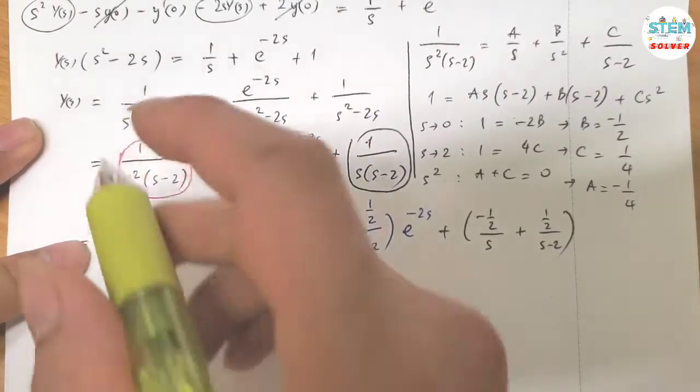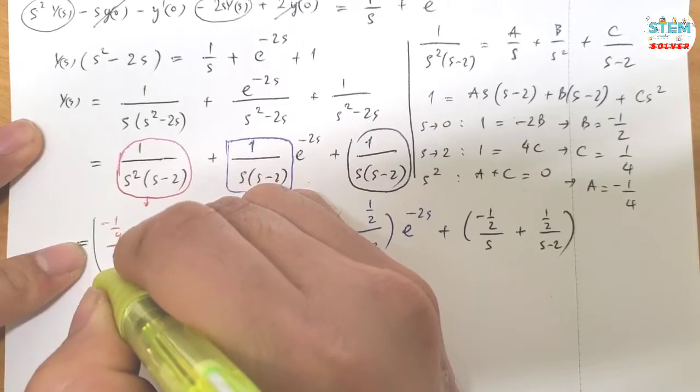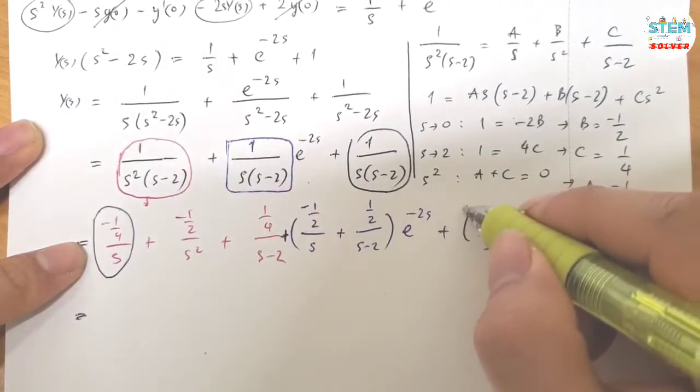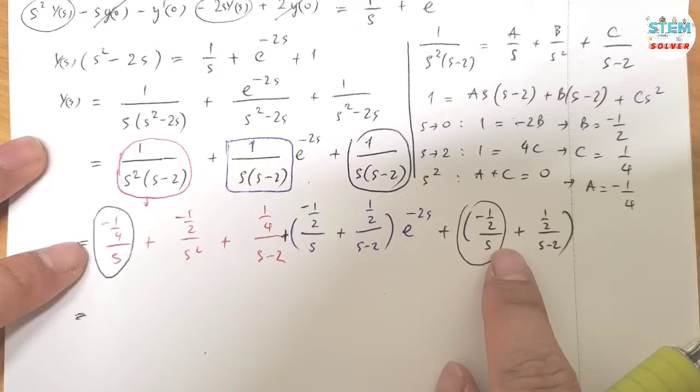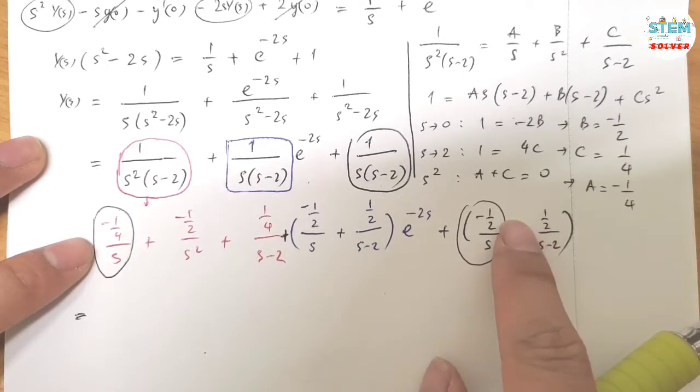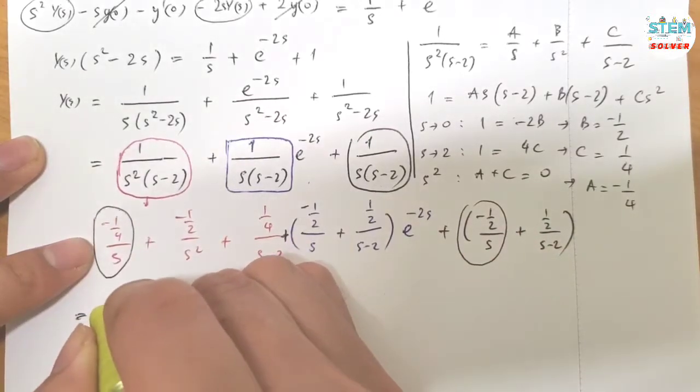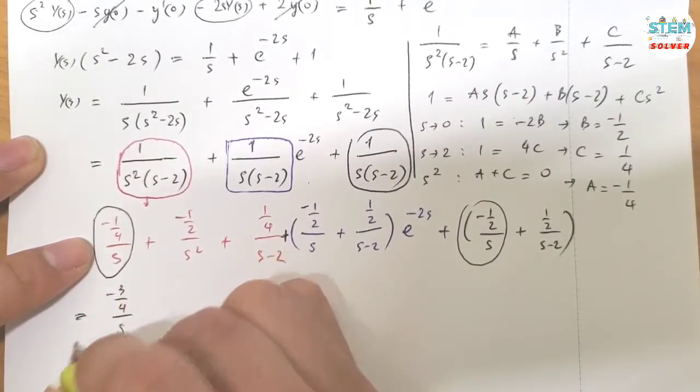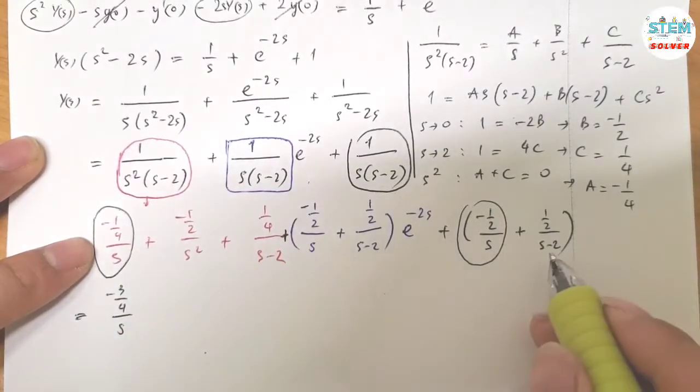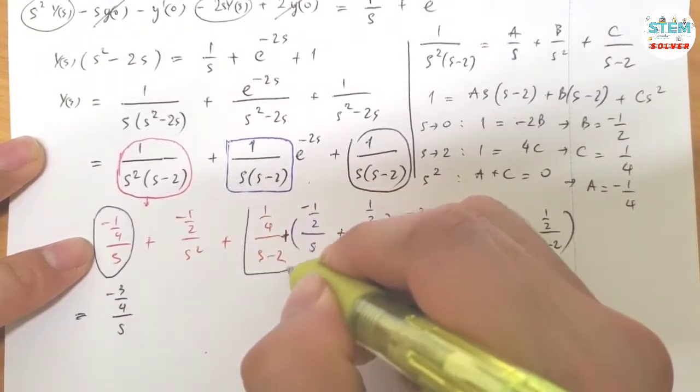So simplify. Yeah, we can simplify it. This one, this one. So negative 1 fourth minus 1 half. Multiply by 2. Negative 3 fourths over S. And S minus 2. This one.